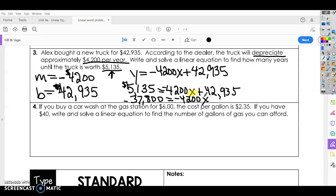Still trying to get x by itself. So now you're going to divide both sides by the negative 4,200. And when you do that, divide negative 37,800 by negative 4,200, you're going to get 9.